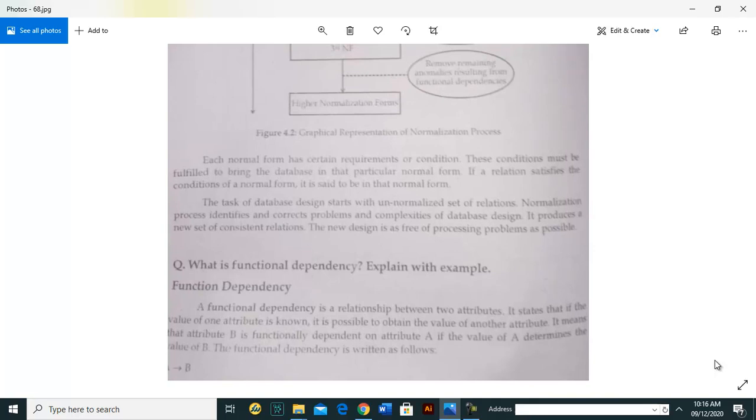Functional dependency is a relationship between two attributes. It states that if the value of one attribute is known, it is possible to obtain the value of another attribute.